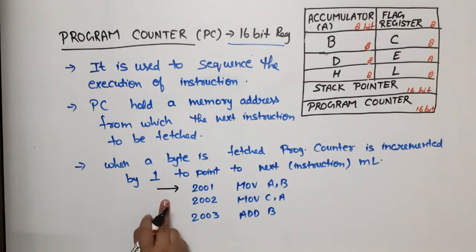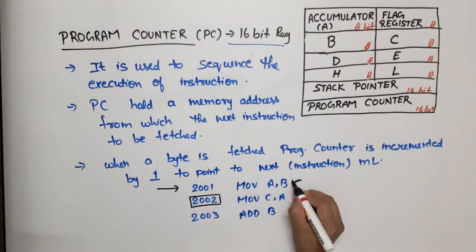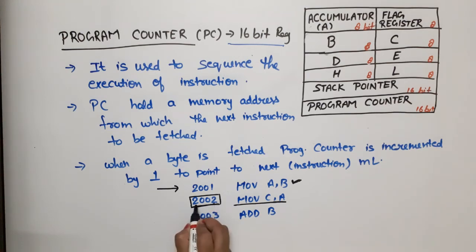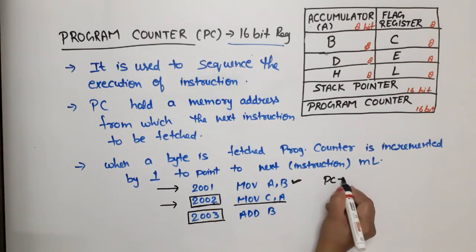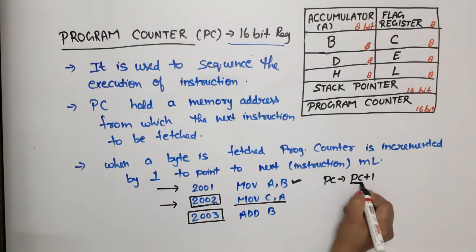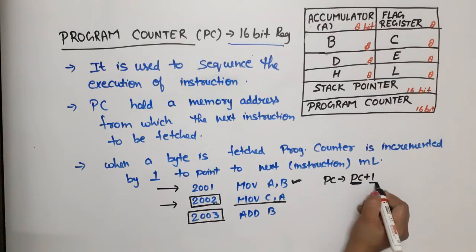When this line is executed, what will program counter hold? 2002. When this operation is performed, it has to perform this operation next. So what is the address of this operation? It will be stored in program counter. When program counter will fetch this instruction, at that time program counter's value will be 2003. After execution of every instruction, the program counter is incremented by plus 1. The previous program counter value, we increment by 1, so we get the new program counter value.